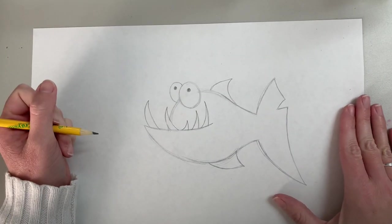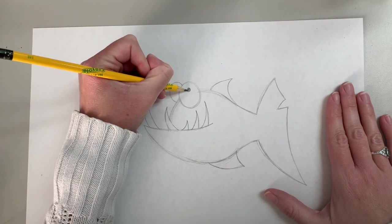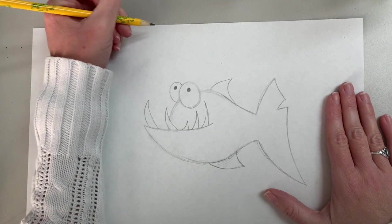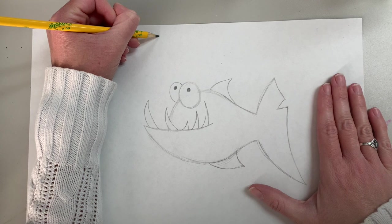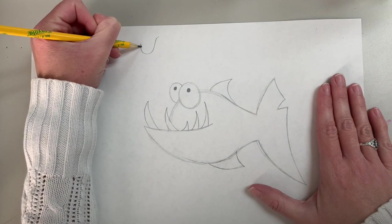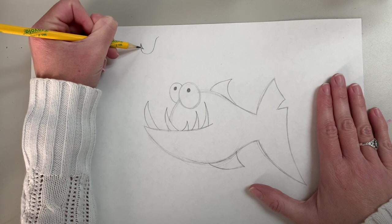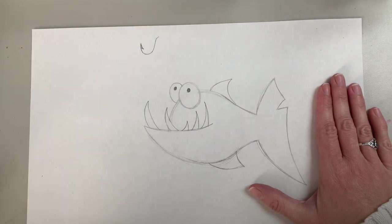And then I want to draw a worm on a hook. So up here, he's looking upwards. I'm going to draw a worm on a hook. So the first thing I'm going to do is have my hook. So I'm going to have my hook come up like a big J. And then have a nice sharp point. Come down and around like that.